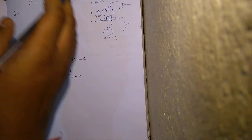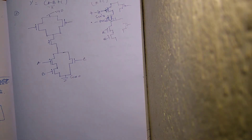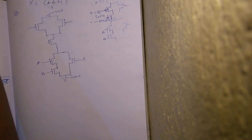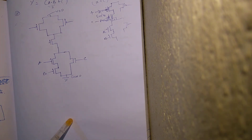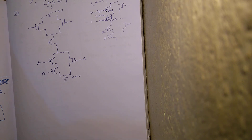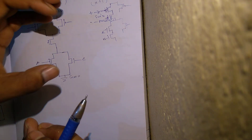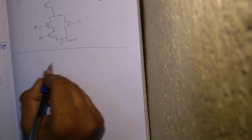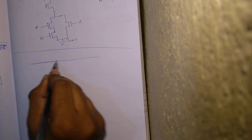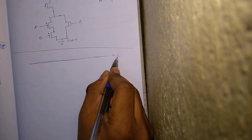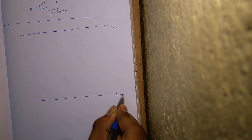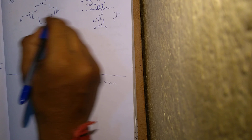I hope you understood how to draw this. Now for this network, let us draw stick diagrams. I am not going to draw all three steps here in one go — in the exam, make use of all three steps and draw step one, step two, and step three separately. First step is to draw your VDD and your ground. This is your A, this is your B, this is your C.